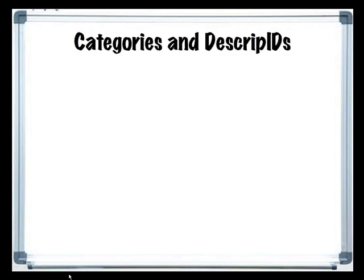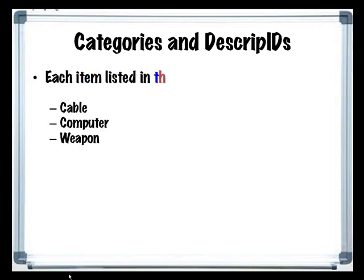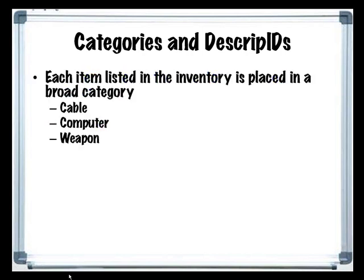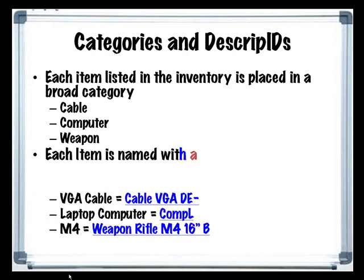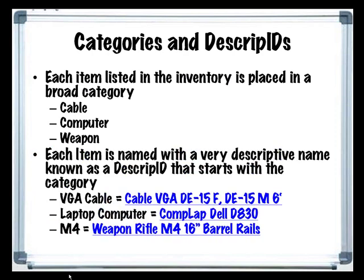In addition to ARC codes, each type of equipment in this database is classified under a broad category of equipment, such as a cable, computer, or weapon. Further, each item is named with a very descriptive name known as a descript ID. The name starts with the category and continues with characteristics unique to that piece of equipment. For example, a VGA cable would be: cable, VGA, D15 female, D15 male, 6 foot. A laptop computer would be: comp lap, Dell, D830. And an M4 rifle would be: weapon, rifle, M4, 16 inch barrel, rails.